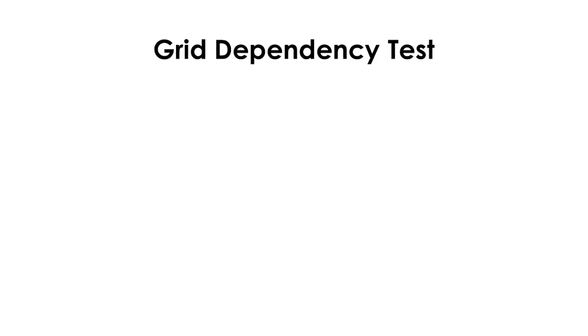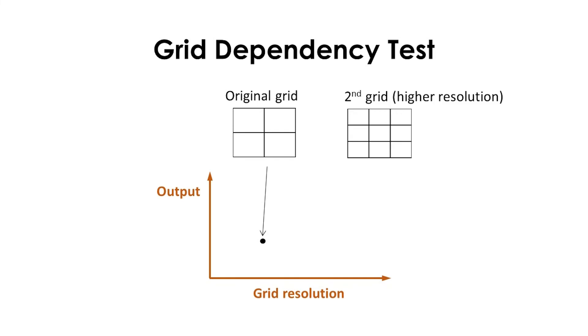The standard method to test for grid independence is to increase the grid resolution and repeat the simulation. If the results do not change appreciably, the original grid is probably adequate.